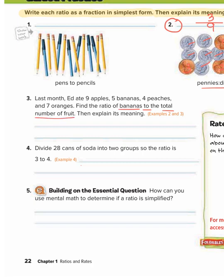So we have five bananas. And we want to find the total number. So to find the total, we have to add nine apples, include the five bananas, four peaches, and seven oranges. And that gives us 25.